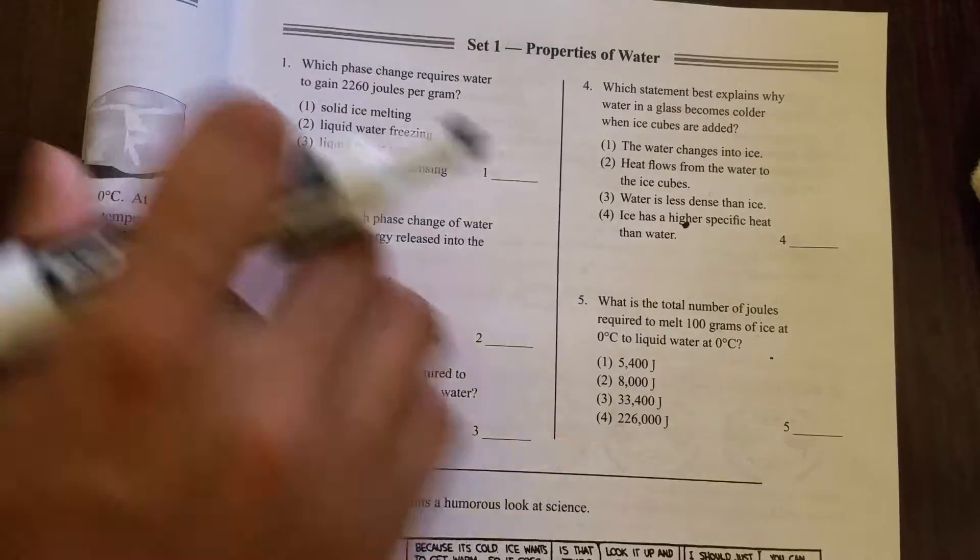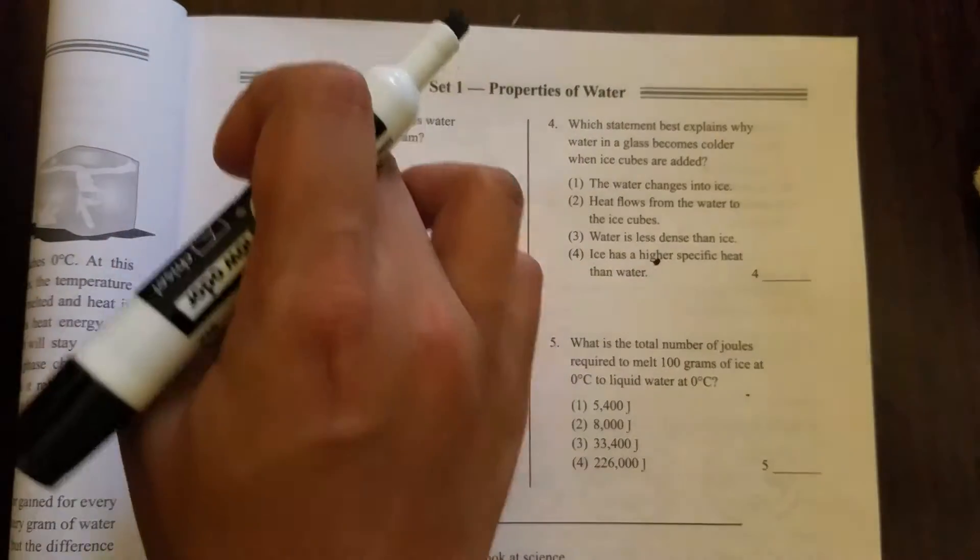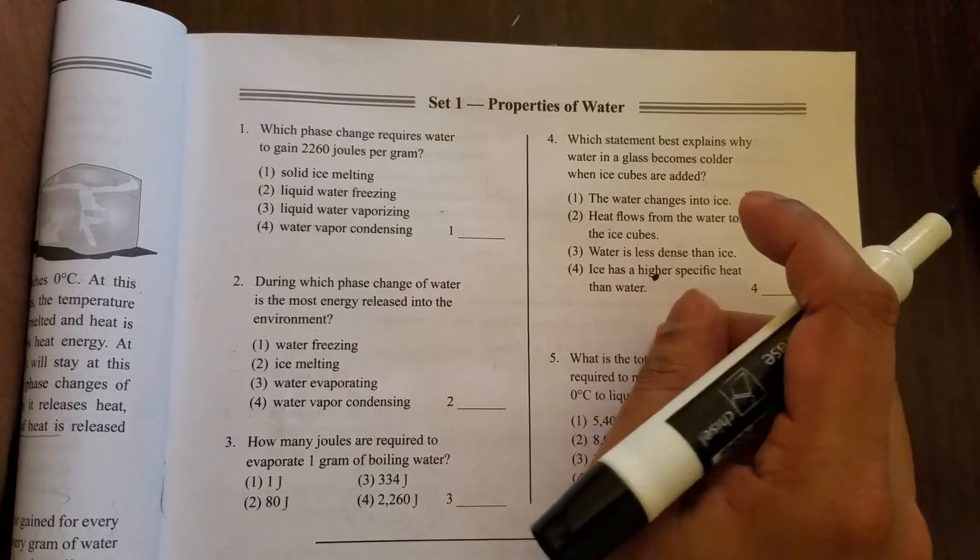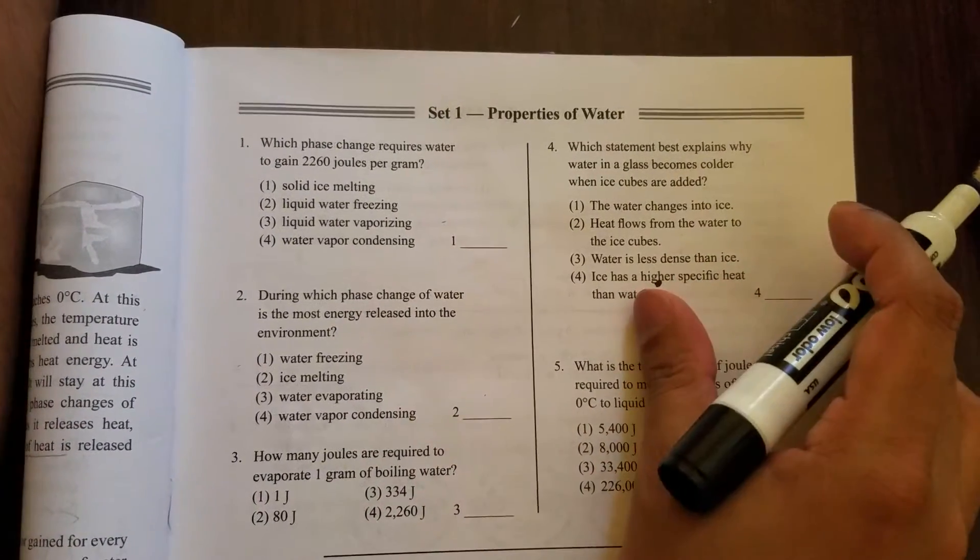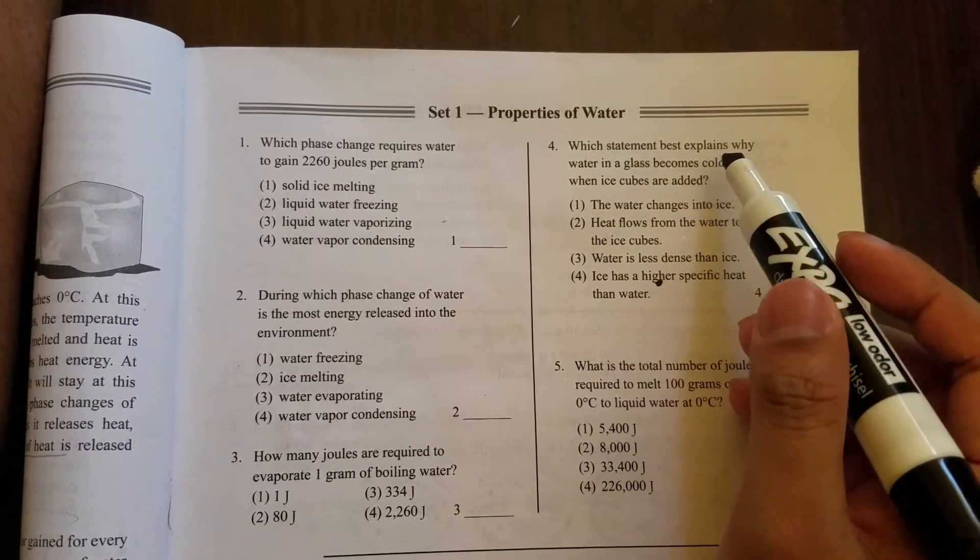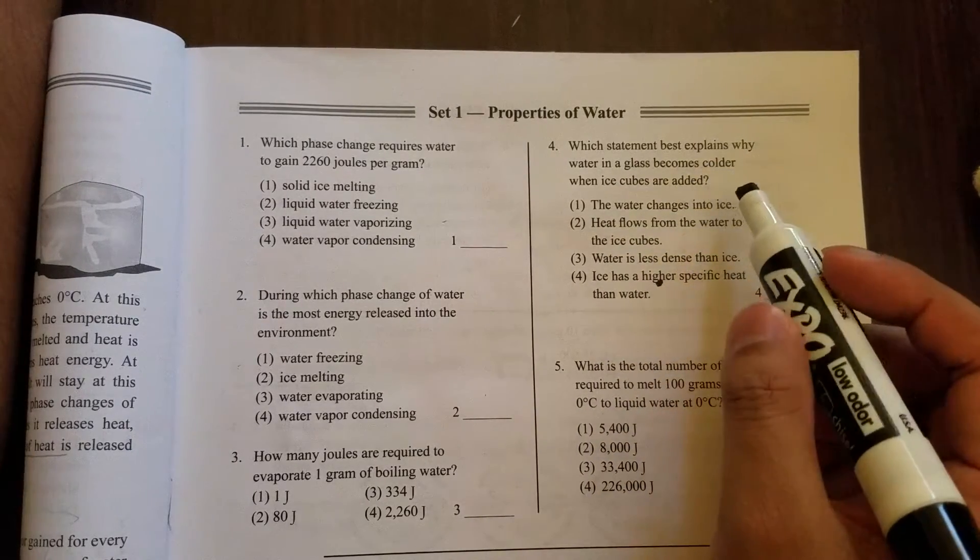So let me show you a Regents question. Question number four - we talked about questions one, two, and five last time. This question number four is actually asking about specific heat. Which statement best explains why water in a glass becomes colder when ice cubes are added?